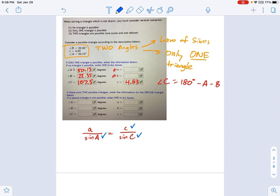So that's going to be equal to A equals C times sine of A divided by sine of C. If you work this out, that's going to be 4.83 times the sine of 50.13 degrees. Put that into your calculator. Divide it by the sine of 107.5 degrees.